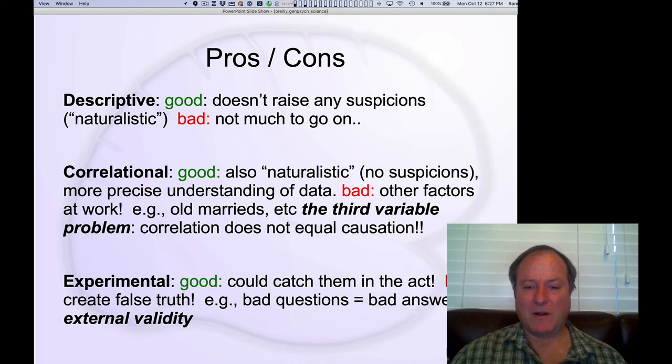And then in the experimental case, you could catch them in the act. You could actually catch this causal relationship. But you might be creating this false truth. You might be creating something that didn't actually exist in the original situation. Especially if your friend succeeds in seducing them. So, basically, bad questions can lead to bad answers. And this is this challenge of external validity.